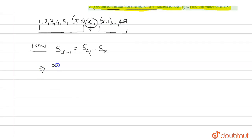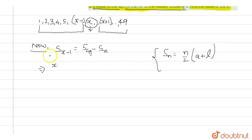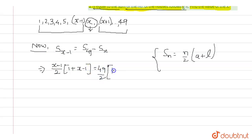Our formula for summation is S_n = n/2 × (a + l), where a is the first term and l is the last term. So here, the number of terms is x minus 1, giving us (x minus 1)/2 × (1 + (x minus 1)).